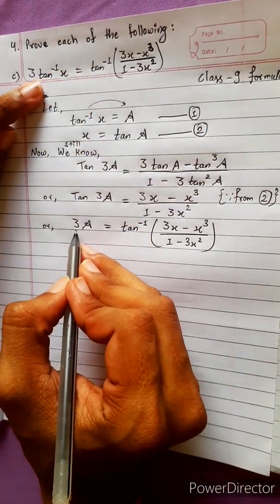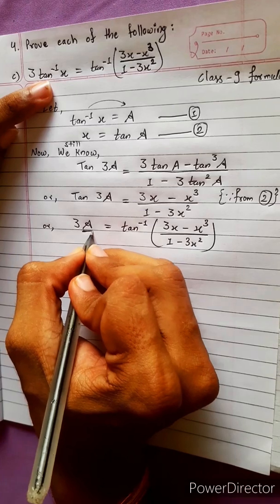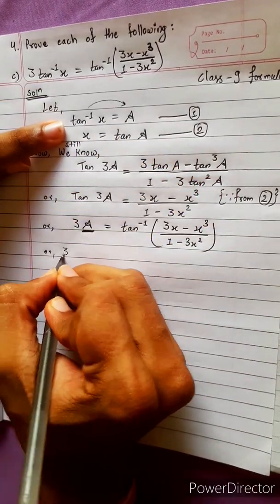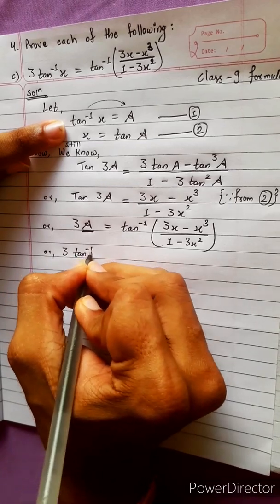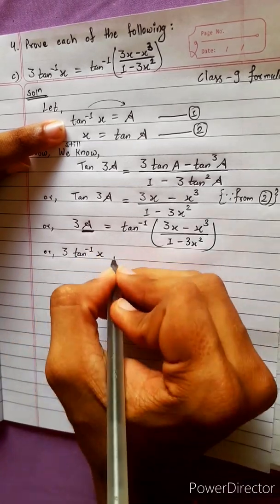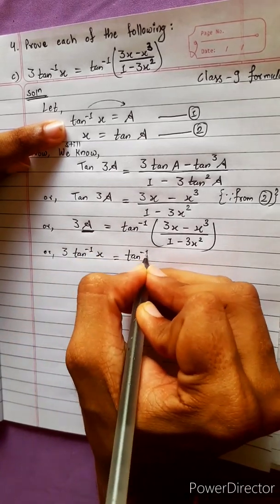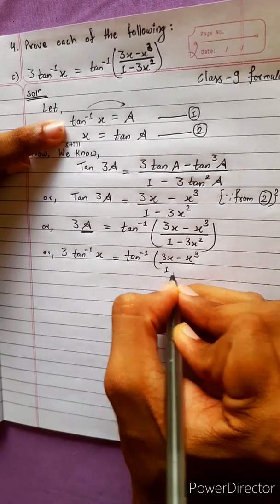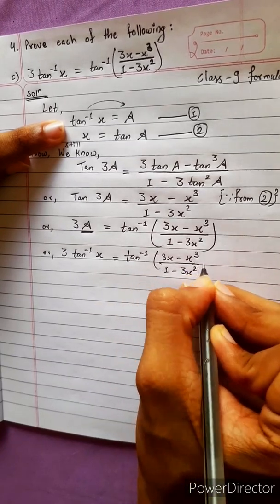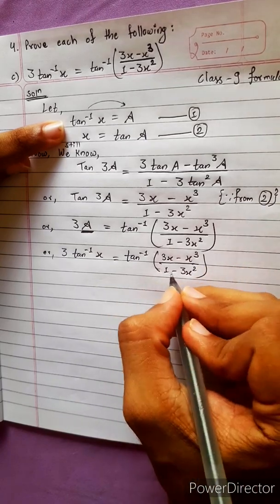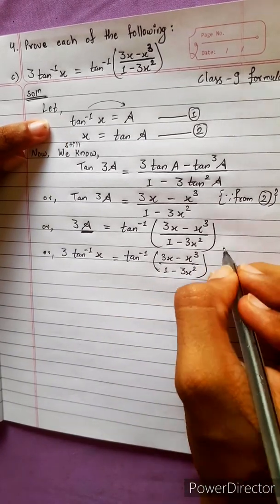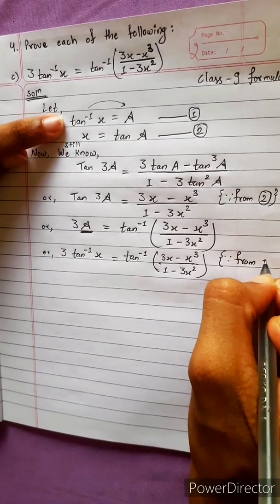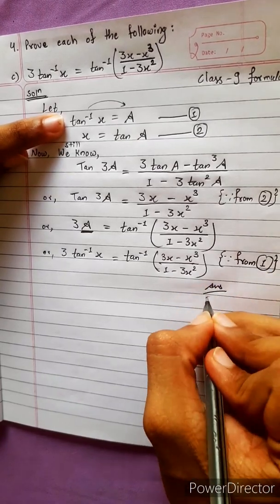So tan⁻¹ equals tan⁻¹ of (3x minus x³) upon (1 minus 3x²). We got the answer — from equation 1 we got this. This is the answer.